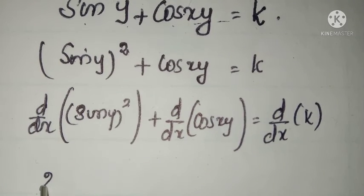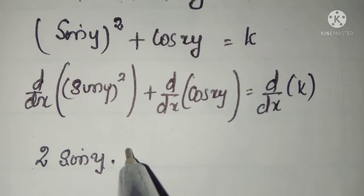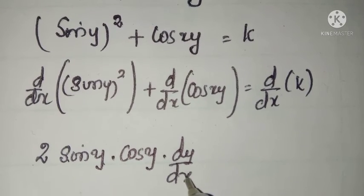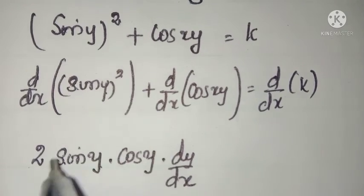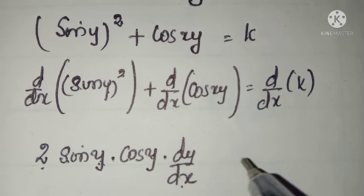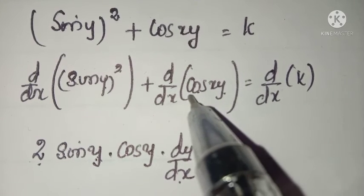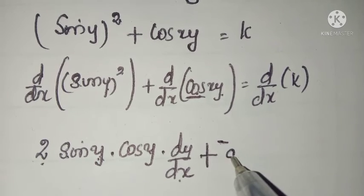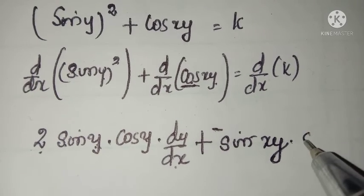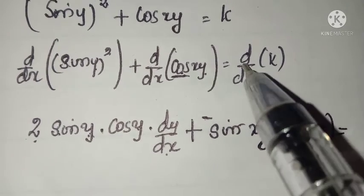Derivative of sin y whole square is 2 sin y, and derivative of sin y is cos y into dy by dx. So sin y whole square differentiates to 2 sin y cos y dy by dx. Plus derivative of cos(xy): derivative of cos is minus sin(xy), into derivative of xy. Equal to derivative of constant k, which is 0.